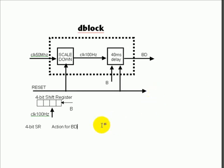If the 4-bit shift register remains 0, then B is not pushed. BD is considered low.